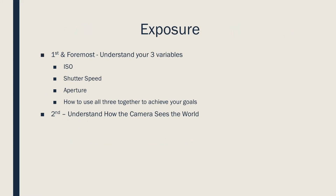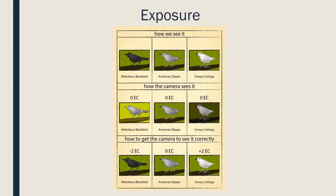On exposure: obviously it's super important. In order to create a properly exposed image, we need to understand the three critical variables — ISO, shutter speed, and aperture — and how to control them together to achieve our goals. One thing that can trip people up, especially those new to bird photography, is understanding that the way our eyes see a scene is not necessarily the same way the camera's meter sees it.